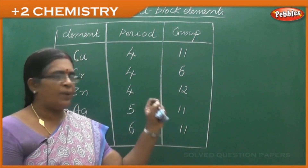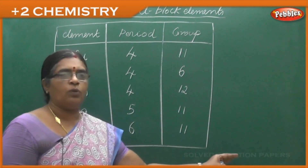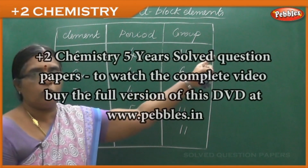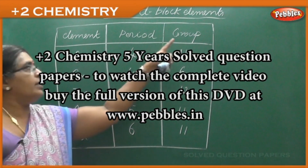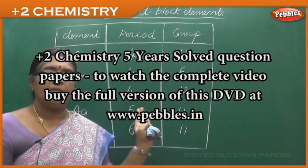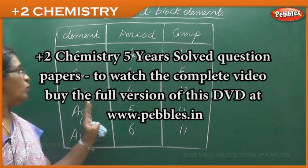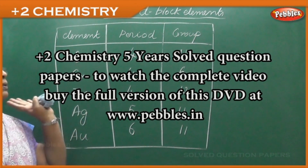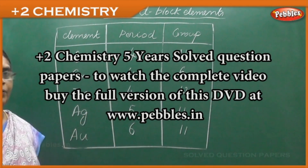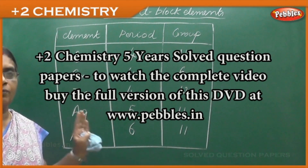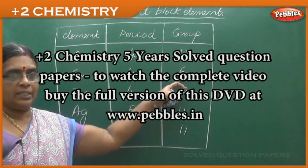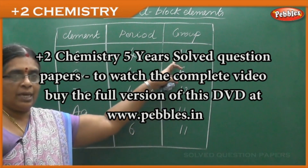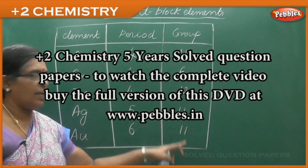Once you get your answer sheet, write this tabular column in pencil somewhere in the corner. The order of elements is: copper, chromium, zinc, silver, gold — same as in the book. For period, remember: 4, 4, 4, 5, 6. For group, remember: 11, 6, 12, 11, 11. That is, 11 for copper, 6 for chromium, 6+6=12 for zinc, then 11 for silver and 11 for gold.